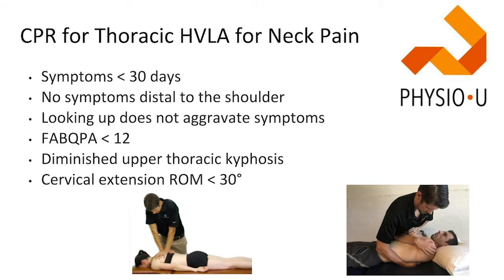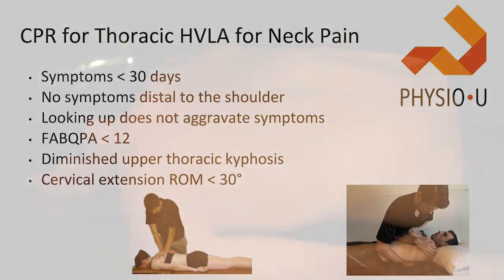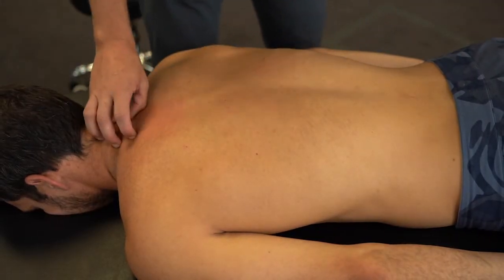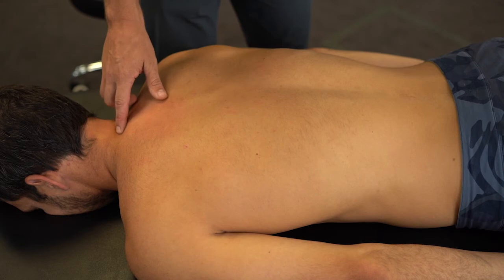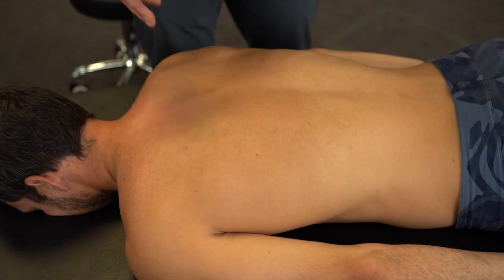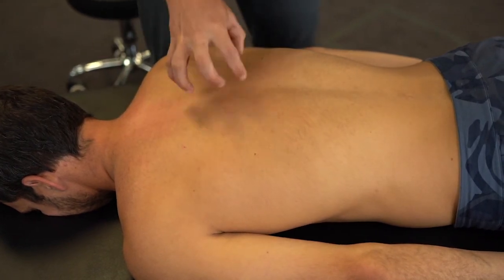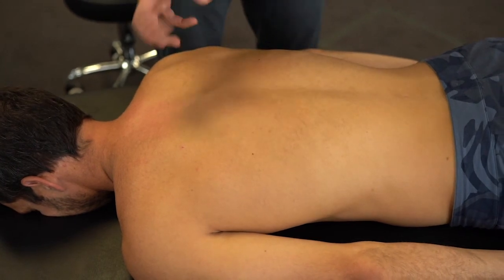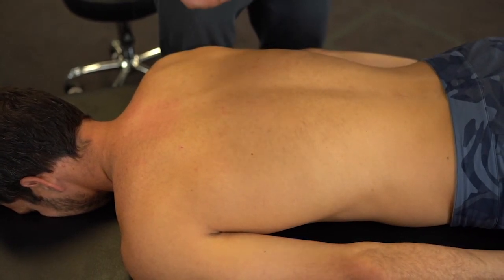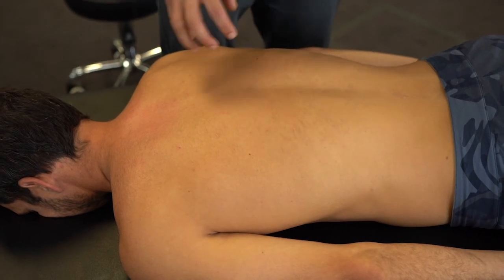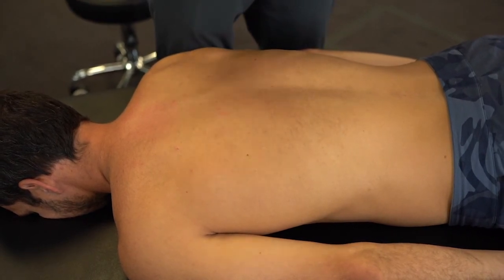The clinical prediction rule for a thoracic spine thrust is for people with neck pain. The criteria are: symptoms less than 30 days, no symptoms past the shoulder — meaning it's a localized issue — looking up does not aggravate symptoms, they're not fearful with an FABQ score less than 12, they have a diminished upper thoracic kyphosis, and cervical extension range is less than 30 degrees. In summary: neck pain that doesn't travel, not fearful, not chronic, looking up doesn't hurt but they have limited range. That's the prediction rule — and we're going to work on giving them a thrust. The article described three types: a flexion distraction, and an extension option. We'll work on the extension (prone) and flexion (supine).